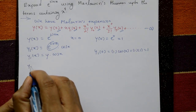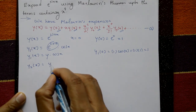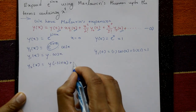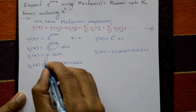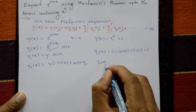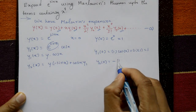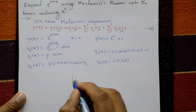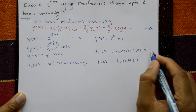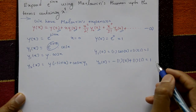Differentiate again using the product rule to find y2(x). y2(x) = y · (−sin x) + cos x · y1. Put x = 0: y(0) = 1, sin 0 = 0, cos 0 = 1, y1(0) = 1. So y2(0) = −1·0 + 1·1 = 1. Therefore y2(0) = 1.